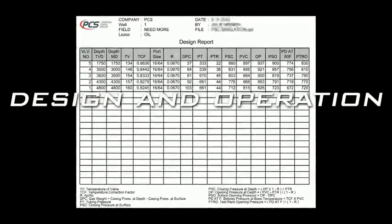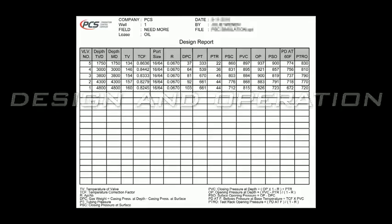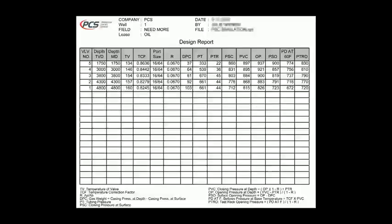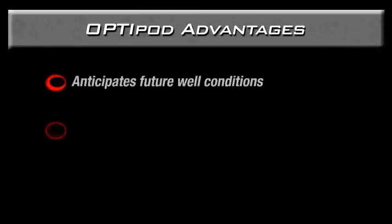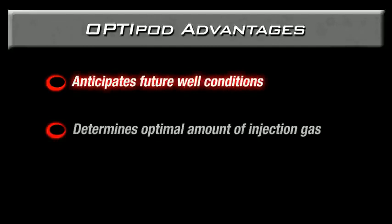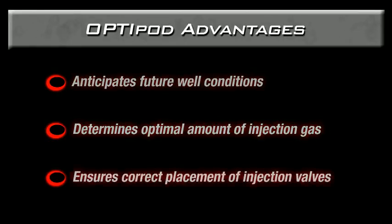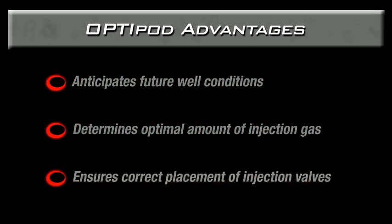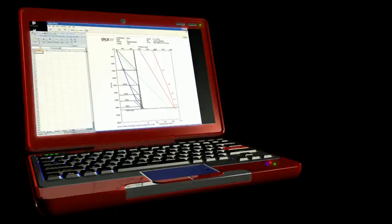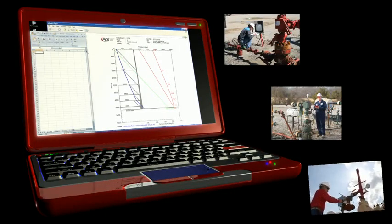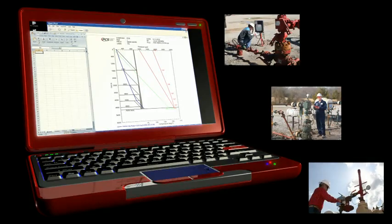Installation of the Optiflow gas lift system begins with a carefully engineered design, customized for your well specifications. Our Optipod software uses both existing and anticipated well characteristics to determine the optimal amount of injection gas needed to deliver fluids to the surface, as well as the correct placement of the injection valves based on pressure calculations. By adapting to both current and future well conditions, the Optiflow gas lift system ensures optimal production throughout the life of the well.